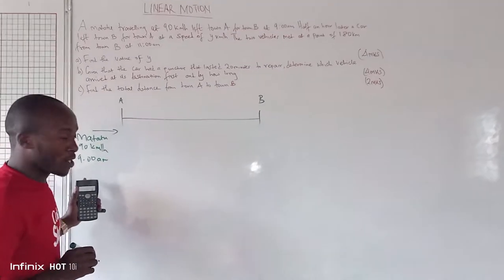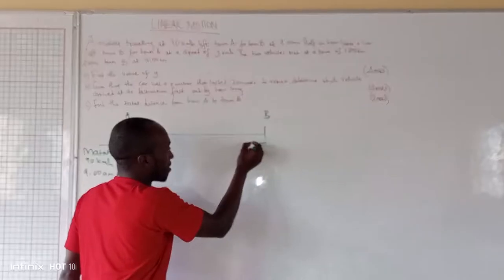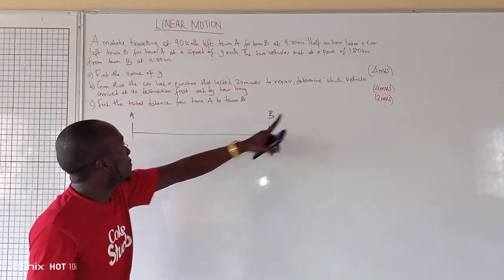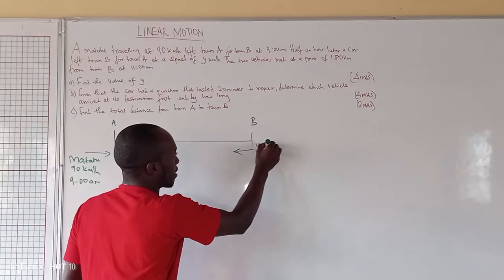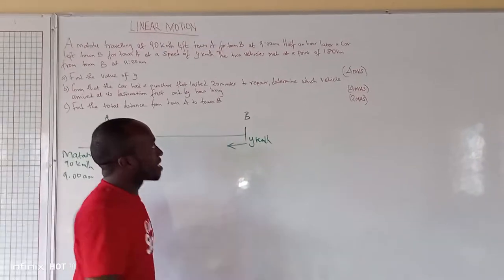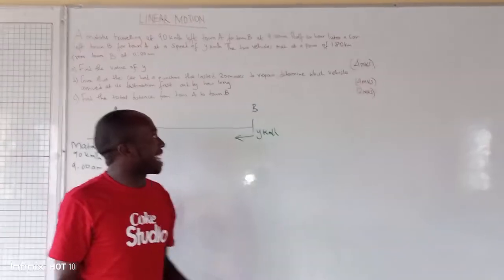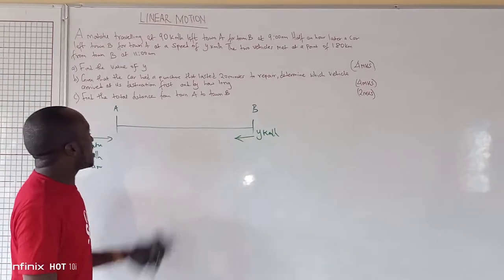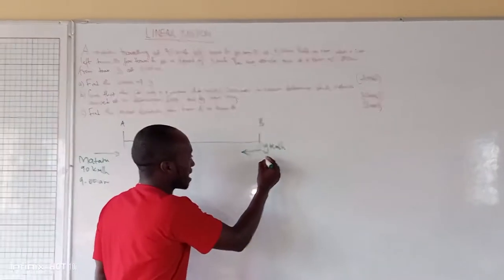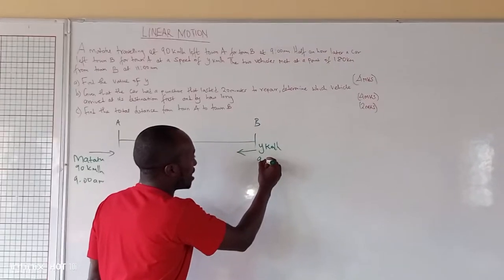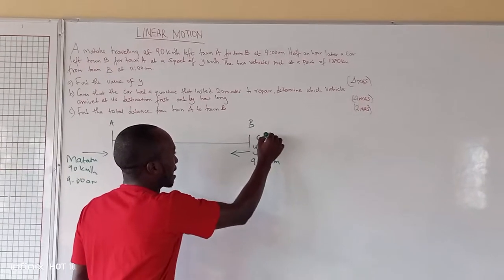The other information: a car left town B for town A at a speed of Y km per hour. The departure time of the car is half an hour later — that is 30 minutes after 9 am — so the departure time of the car was 9:30 am.